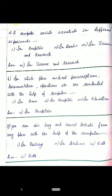Question G: You can also buy and cancel tickets from any place with the help of computers. Options are: first option in railways, second option in airlines, third option both. The correct option is both, because in railways and airlines we can also cancel and buy tickets.